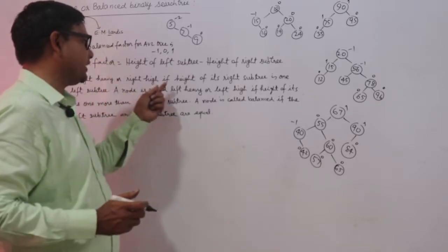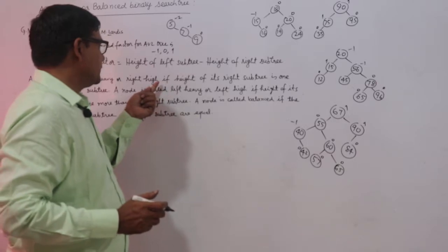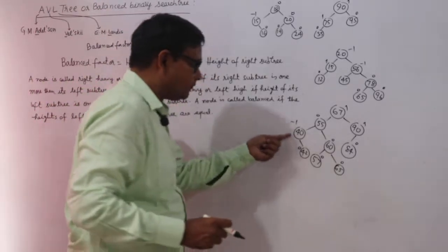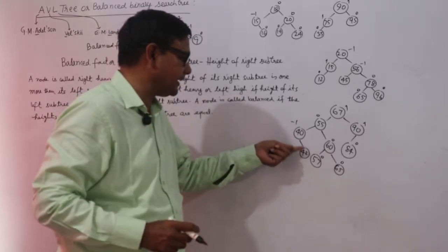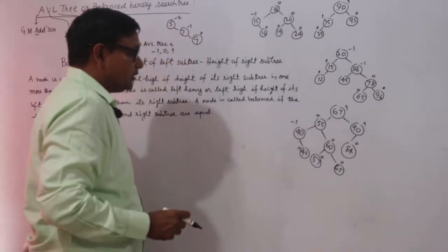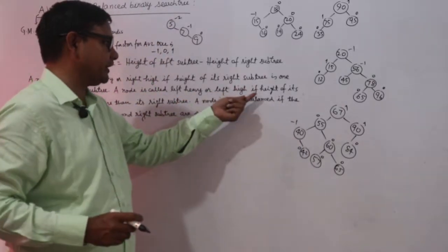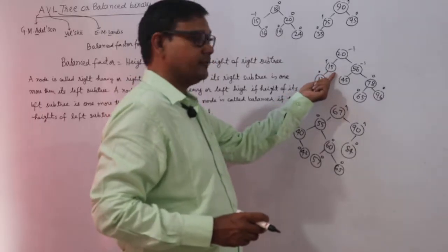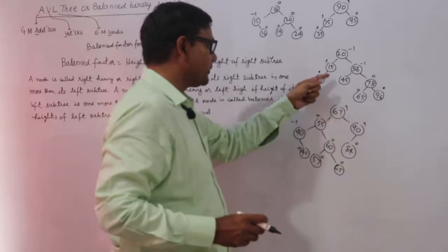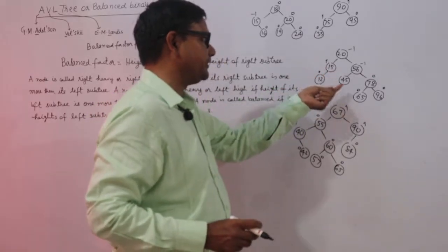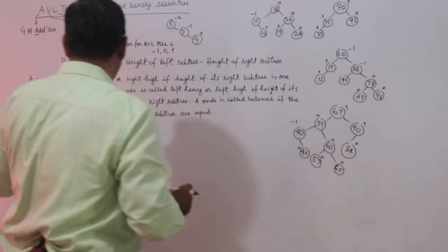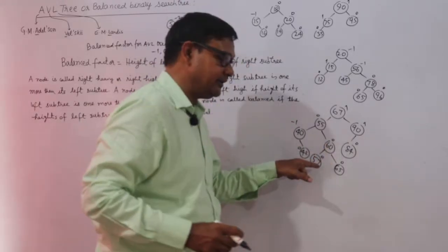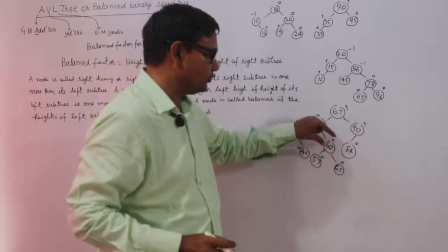A node is called right heavy or right high if the height of its right subtree is one more than its left subtree. I can see this node is right heavy because its left subtree has height 0 and right subtree has height 1. A node is called left heavy or left high if the height of its left subtree is one more than its right subtree. Node 15 is left heavy because height of its left subtree is 1 and height of its right subtree is 0. A node is called balanced if the heights of the left subtree and right subtree are equal. Node 60 is balanced because height of its right subtree is 1 and height of its left subtree is also 1.